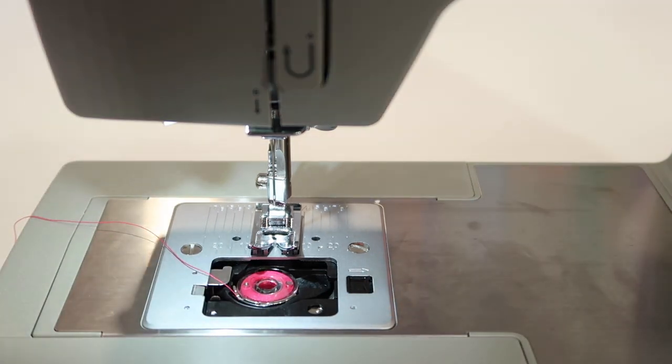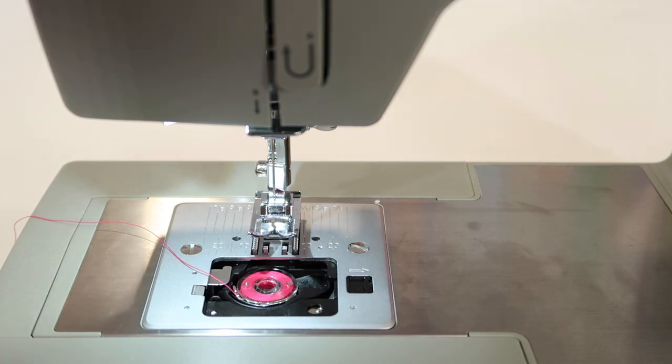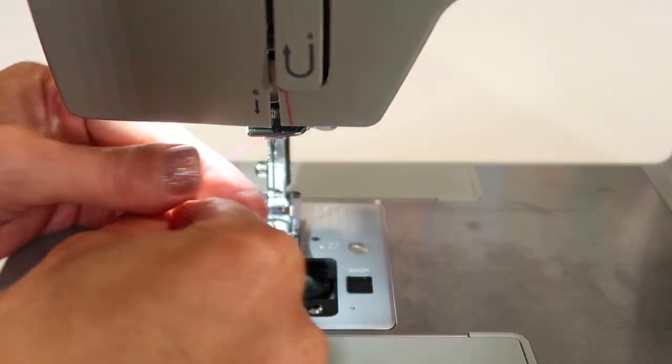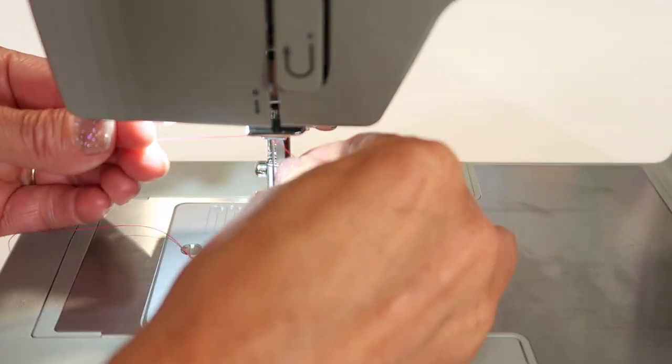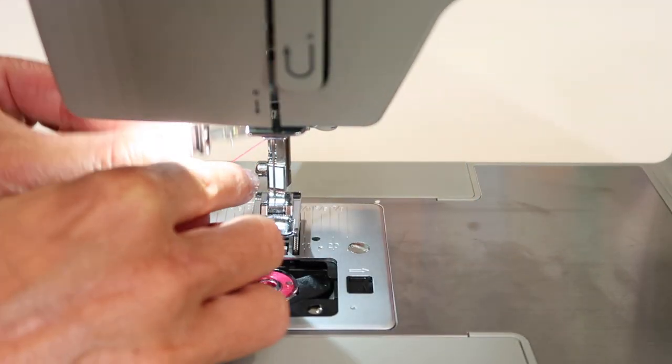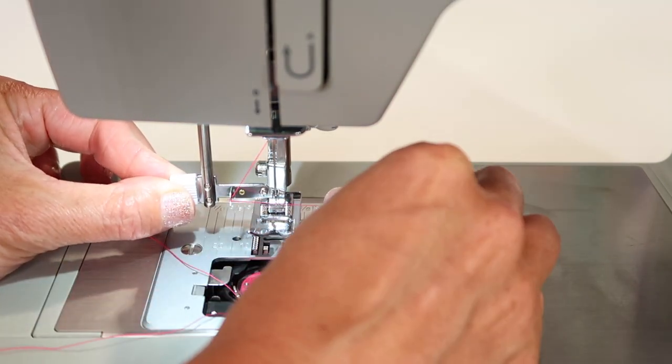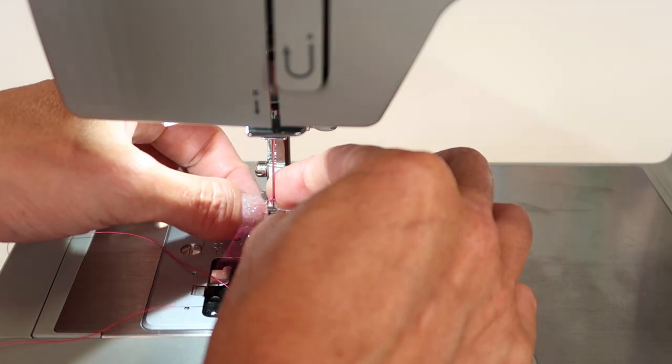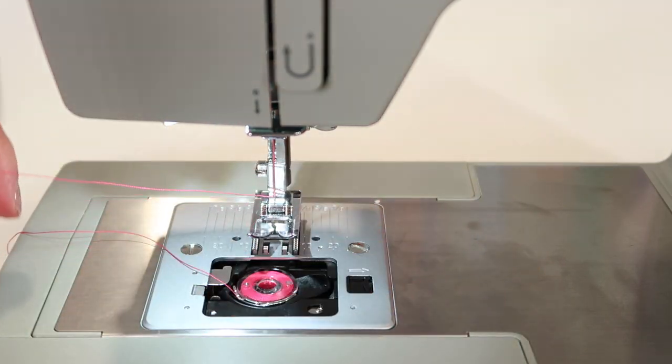Let's re-thread the machine. I am going to make sure my presser foot is up when I thread the machine all the way through so I know that it's getting into all of the grooves. Then, depending on my next fabric, I'll be placing the right needle in. It's a little heavier fabric, put a heavier needle in. A little lighter weight fabric, put a little smaller needle in.